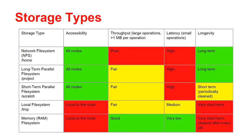Then we have the local file system under temp. This is local to the compute node. Its throughput is fair and latency is medium, and this is meant for very short-term storage, so any files you put in there should only exist while the job is running and should be copied elsewhere or deleted shortly thereafter. Finally, we have the system RAM, which is local to the node. It has good throughput and very low latency, but the data in the RAM exists only while the job is running and is cleaned after every job.